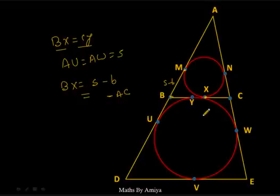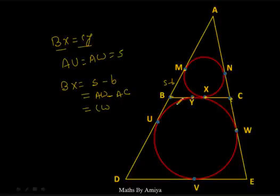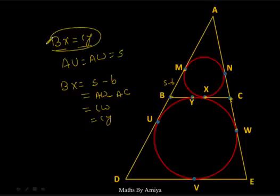S equals AW. Then AW − AC = CW, and CW is a tangent to the bigger circle, so CW = CY. Therefore BX = S − B = AW − AC = CW = CY. This proves BX = CY.